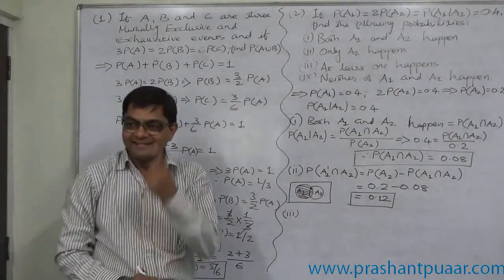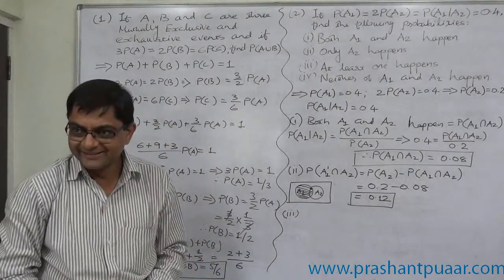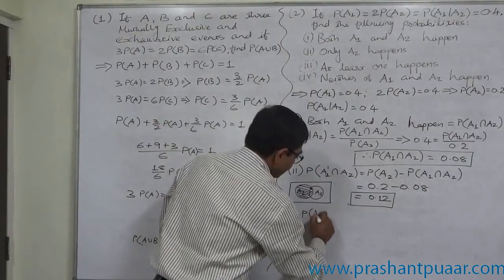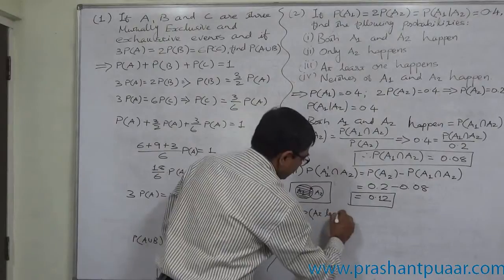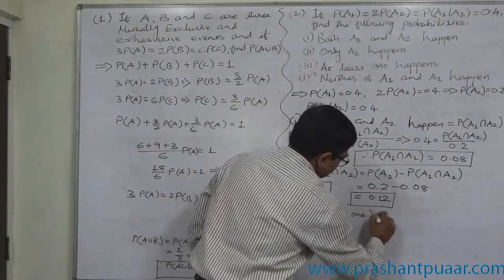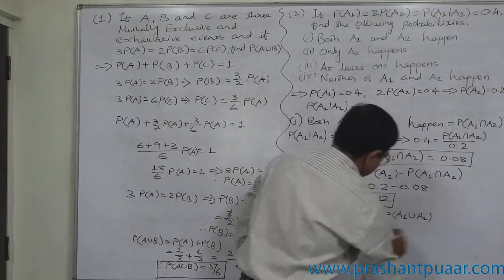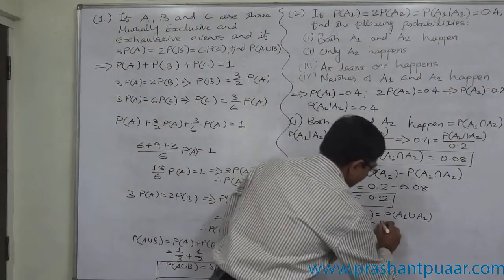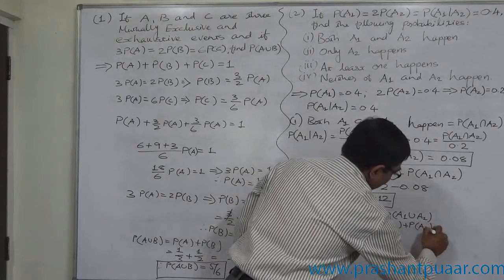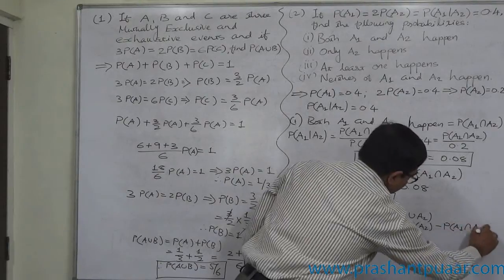Number 3, at least 1. What is at least 1? P of A1 union A2. Probability of at least 1 of 2. P of A1 union A2, and that means P of A1 plus P of A2 minus P of A1 intersection A2.